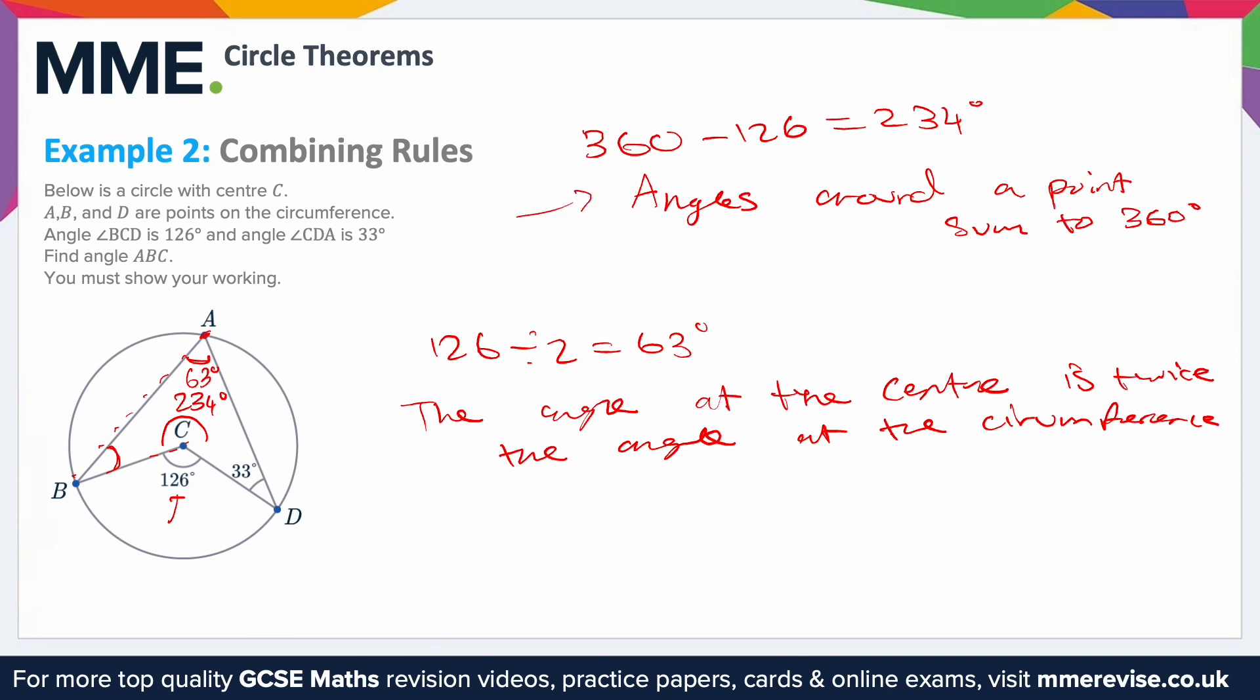So now the second circle theorem that we will apply—this one isn't a circle theorem, this is just a generic angle rule. So then the next rule that we can apply is that angles in a quadrilateral sum to 360. Now, this sort of arrowhead is a quadrilateral because there's one side, there's two, there's three, there's four—it's a four-sided shape, so all the angles sum to 360.